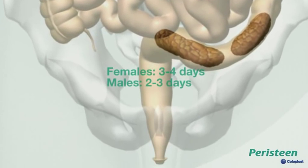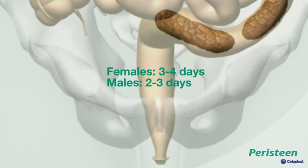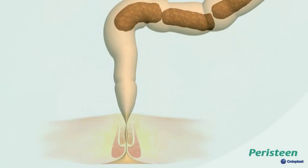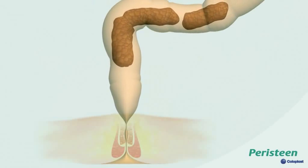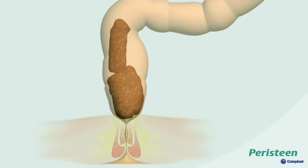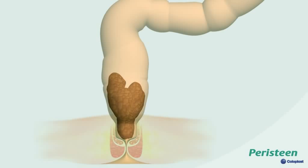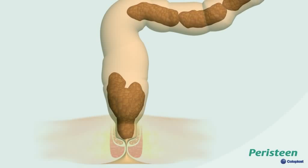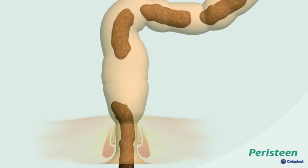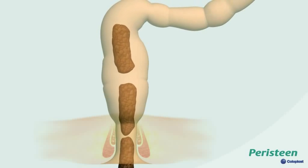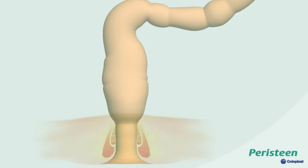The time it takes for food to pass through your digestive system is called the transit time. The average transit time for females is three to four days, and two to three days for males. When stool fills your rectum, nerve endings register that your bowel wall becomes distended and a signal is sent to your brain, telling you it's time to find a toilet. At the same time, your internal sphincter relaxes by reflex and stool moves down to the anus.